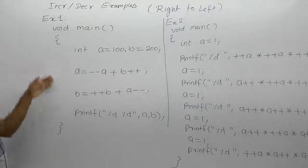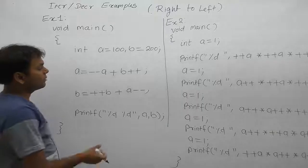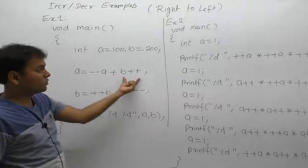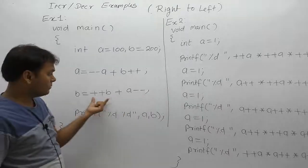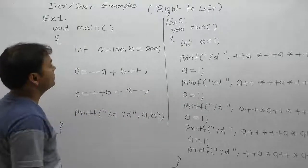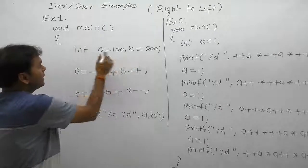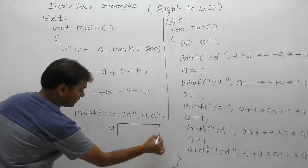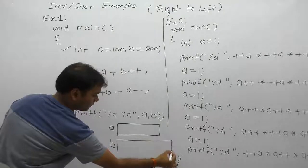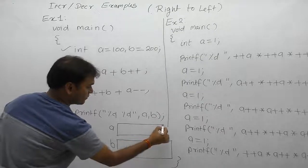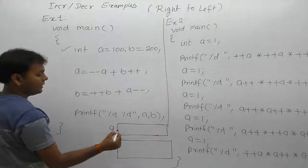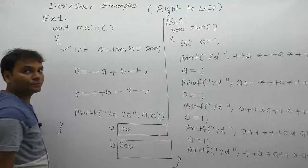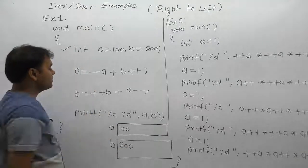Now concentrating on data examples. First of all, in this case it is a combination of decrement as well as increment — pre-increment, post-decrement, post-increment. First of all, we are creating two variables a and b, allocating memory space for variable a and variable b. Initially a is initialized by 100 and b is initialized by 200.